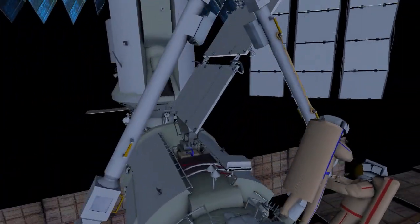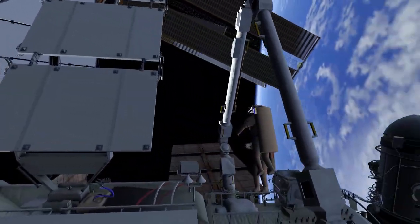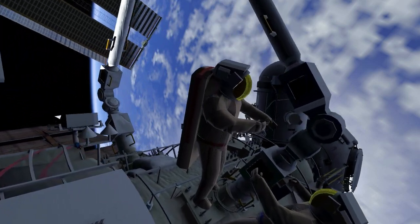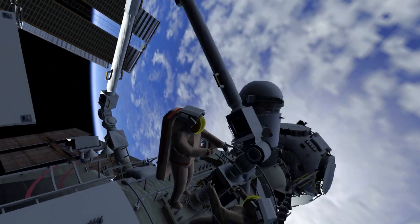After retrieving the temporary handrail, the crew will translate to ERA's end effector number 1, where they'll repeat the process to install a second gap spanner.